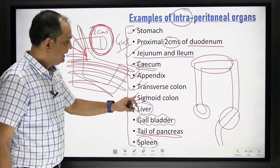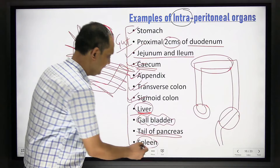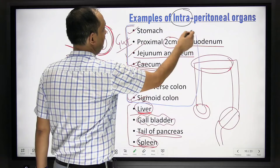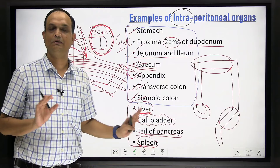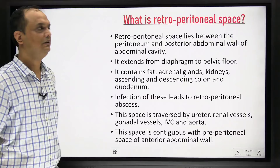For liver and spleen, the outer visceral peritoneum forms part of their capsule. For gut tube organs — stomach, intestines — the outer peritoneum is called serosa. You need to keep this list of intraperitoneal organs in mind whenever reading about them.